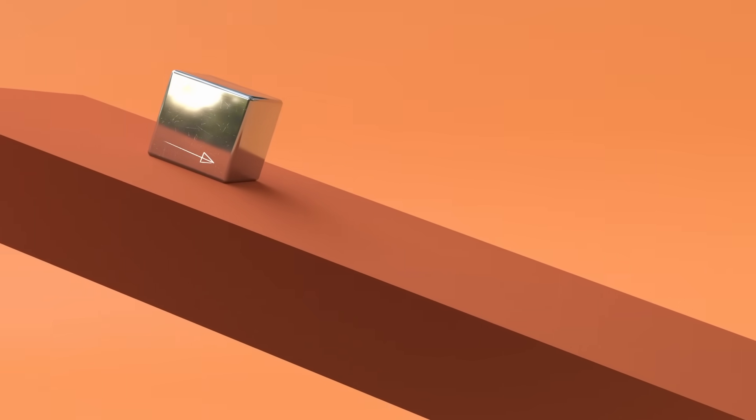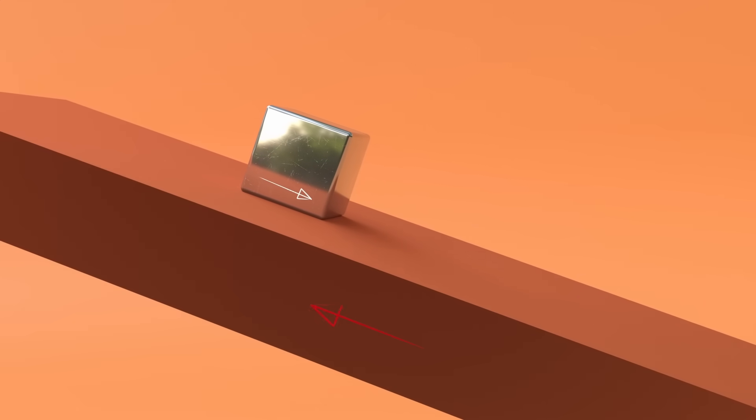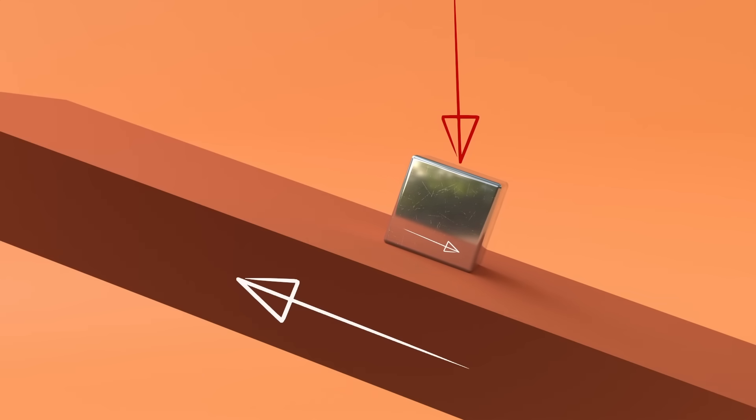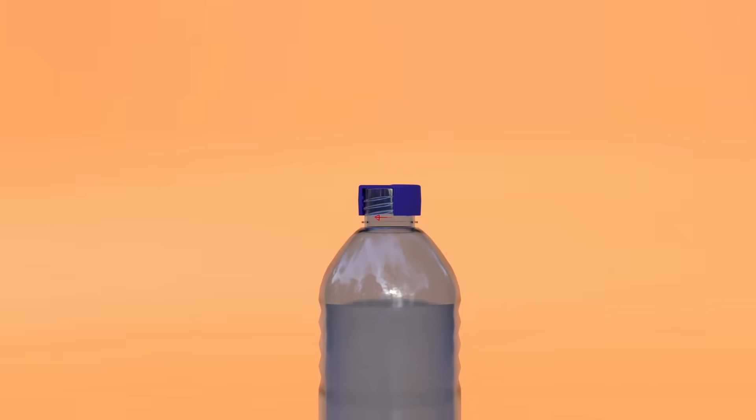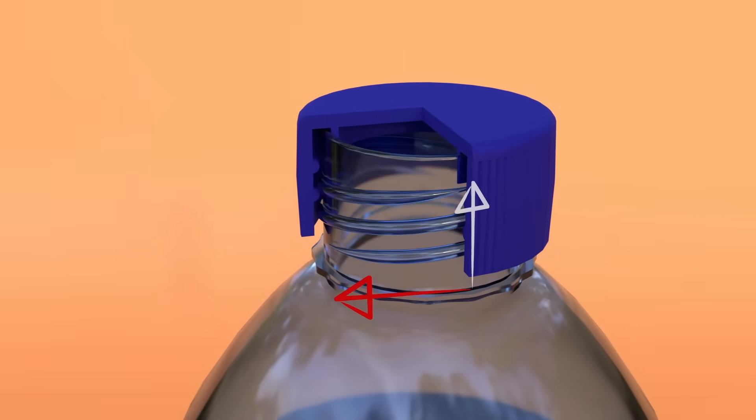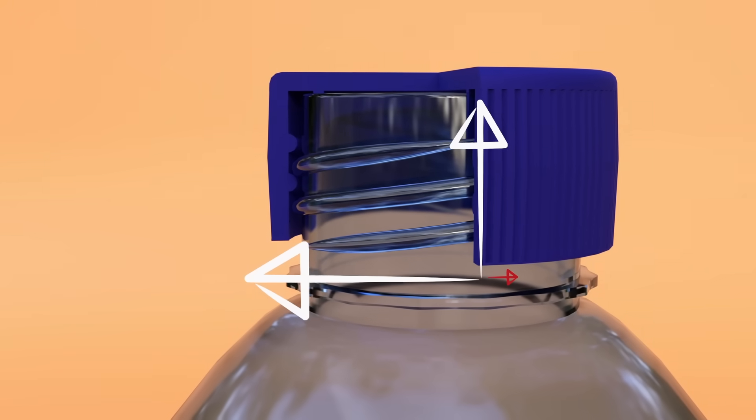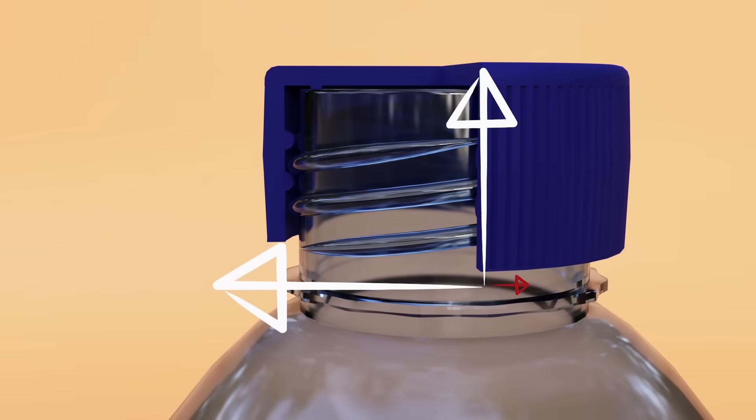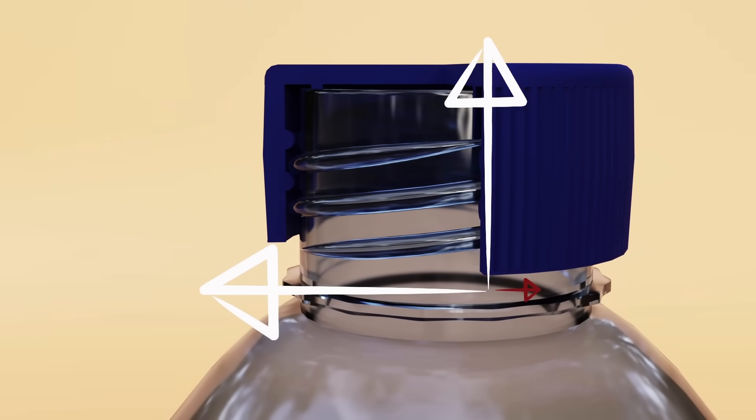The reason that lids and caps don't just unscrew by the pressure inside is because the friction between two things increases when they are pushed together, making it harder to move. Now, the friction between the threads increases faster than the sideways forces that are created by the angle of the thread, because the angle is very low.